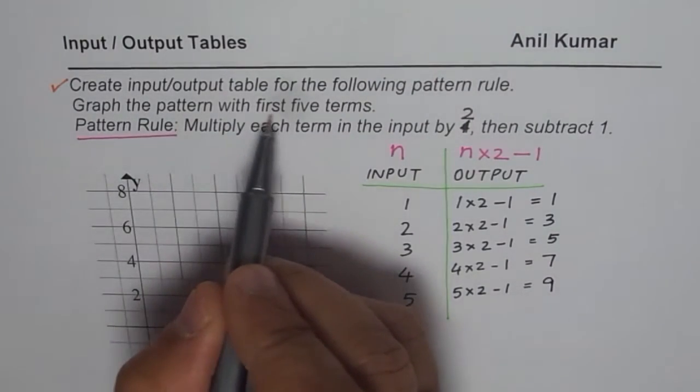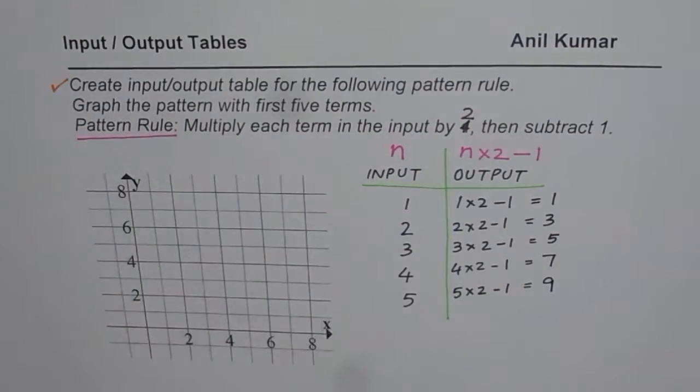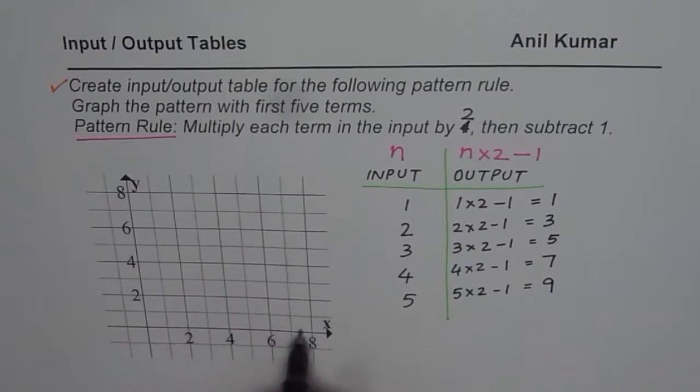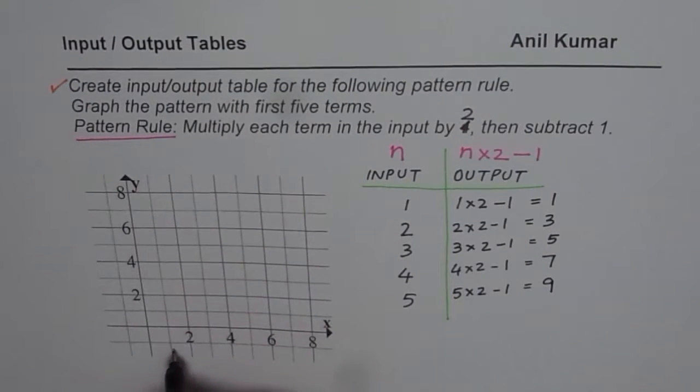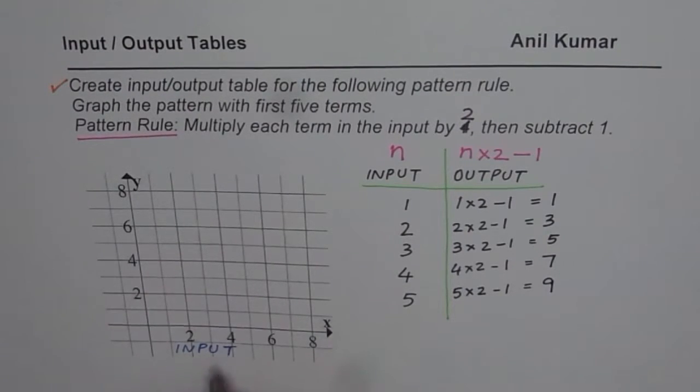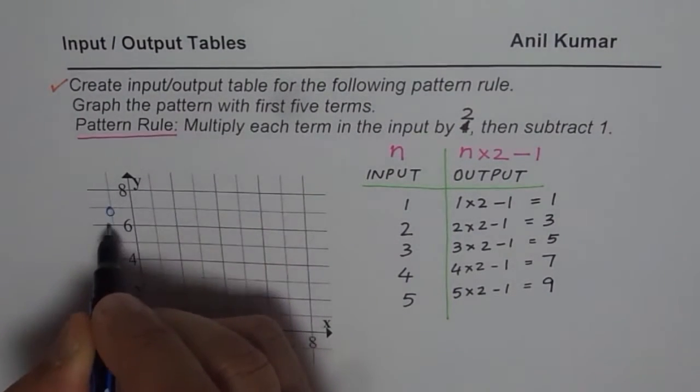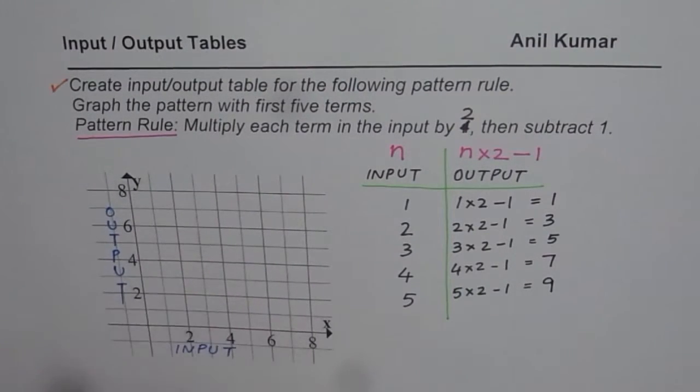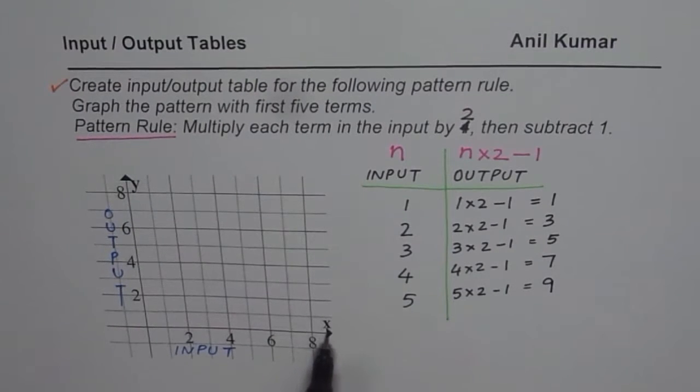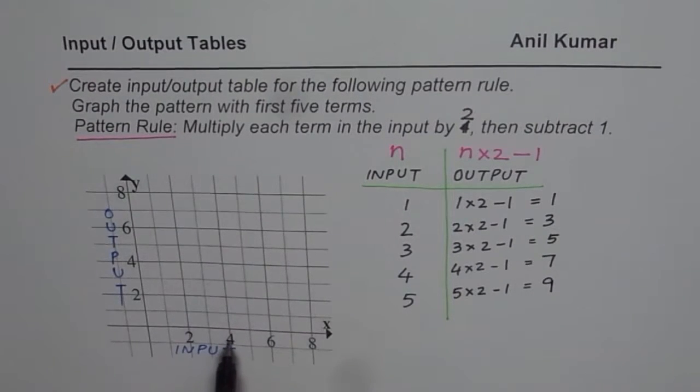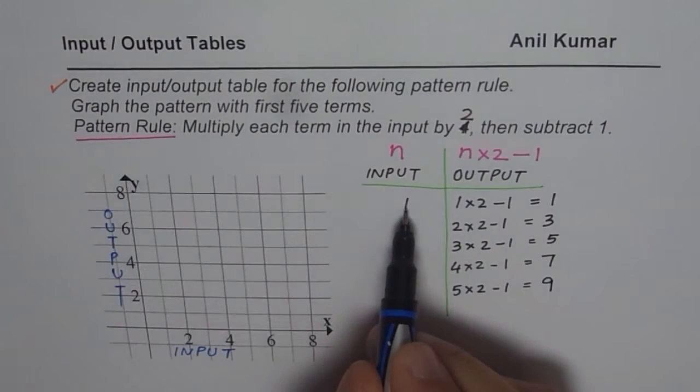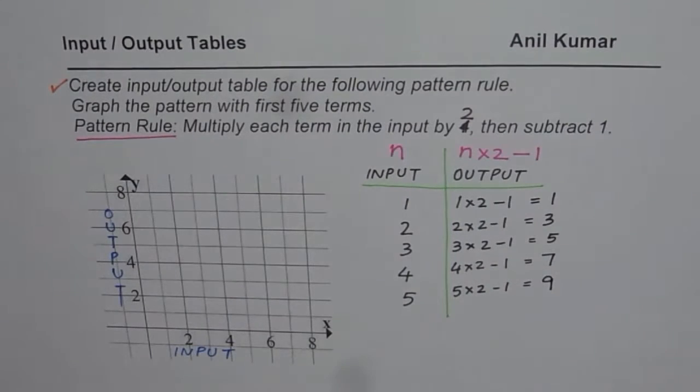Now the second part is graph the pattern with first 5 terms. I have a graph paper here for you. Normally we will take input along the x axis, so we'll write input here. And the output will be along the y axis. We also say this is independent and that is dependent on the value of input.